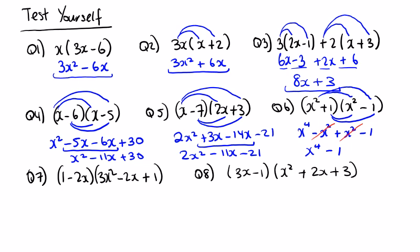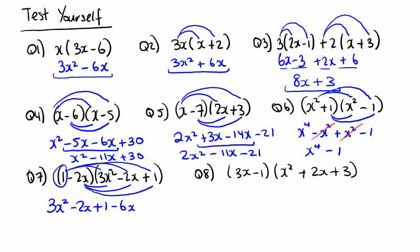Now we have 2 things by 3 things, so we have six sums: 1 by 3x squared, 1 by 2x, 1 by 1; then minus 2x by 3x squared, minus 2x by minus 2x, and minus 2x by 1. Since 1 multiplied by anything doesn't change the value, the first three answers are 3x squared minus 2x plus 1. Minus 2x by 3x squared is minus 6x cubed (1 plus 2 is 3); minus 2x by minus 2x gives plus 4x squared; minus 2x by 1 is minus 2x. Starting with the highest power: minus 6x cubed. Then 3x squared plus 4x squared is 7x squared. Then minus 2x minus 2x is minus 4x, and plus 1.